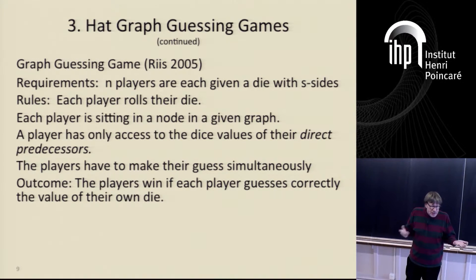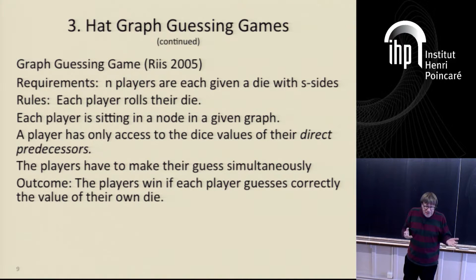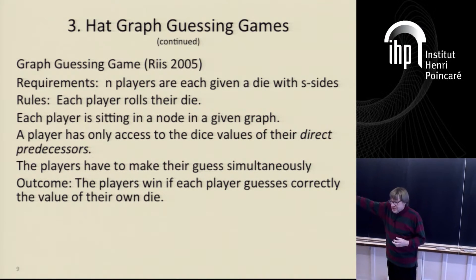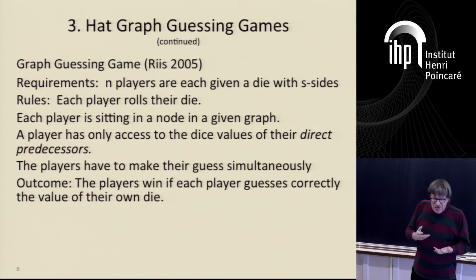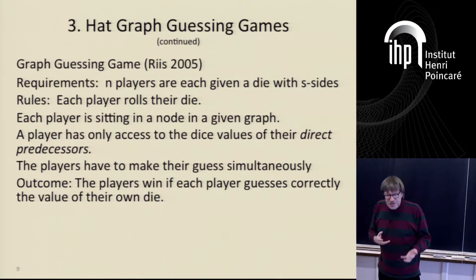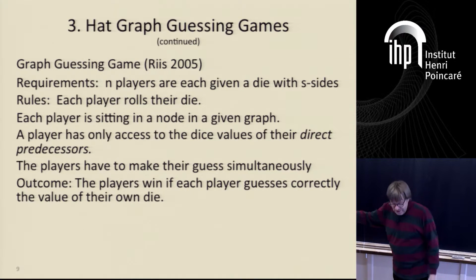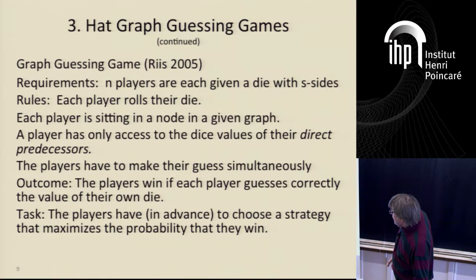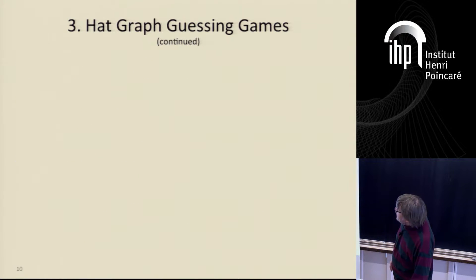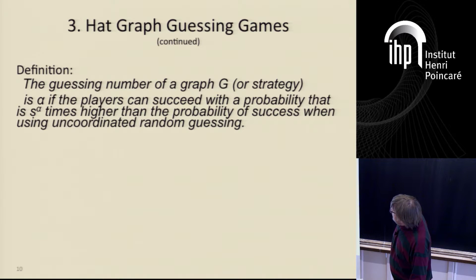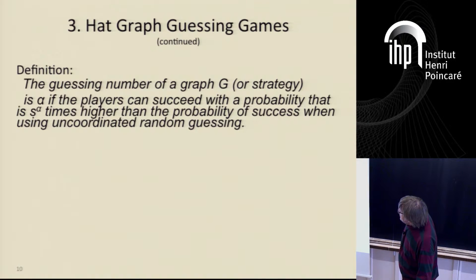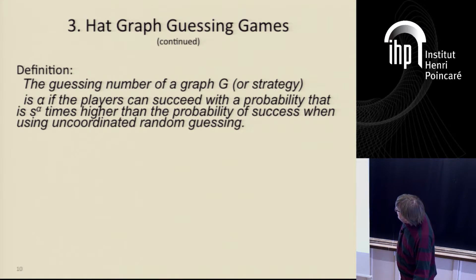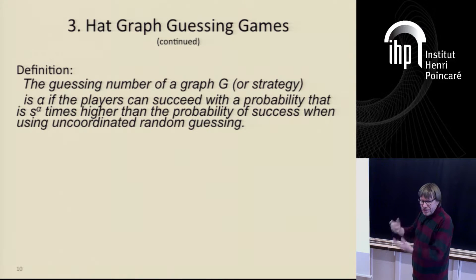Again the players have to guess simultaneously and you want to maximize the probability that they're all correct. They win if everybody's correct, otherwise they lose. There are variations — for example, what if just one player has to be correct — but it turns out that those variations lose the nice link to information theory. Again, they have to choose their strategy in advance.